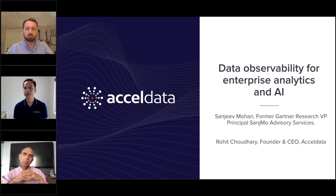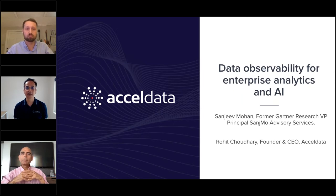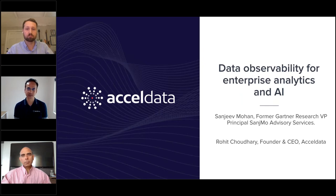What we figured out was that the big five — the Facebooks, the Apples, the Netflix, and many other companies — have actually invested in data management practices and built their multi-dimensional data observability tools, which allow them to get the right level of insight into their operational systems at production at scale. Unfortunately, 95% of enterprises don't have access to those kinds of systems.